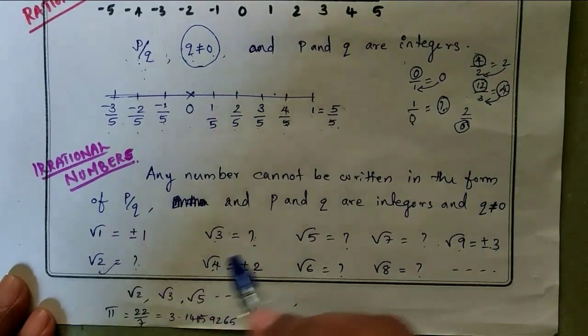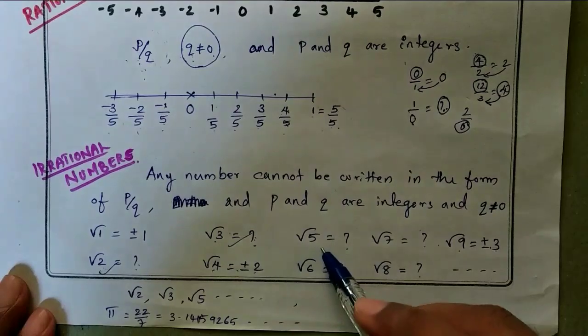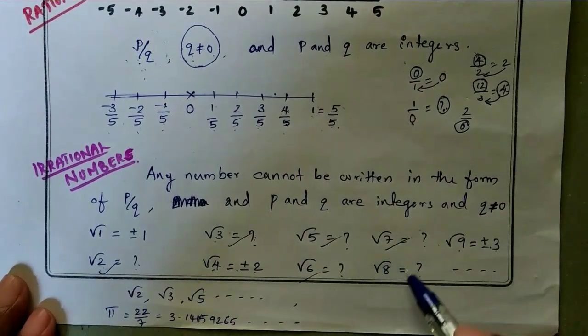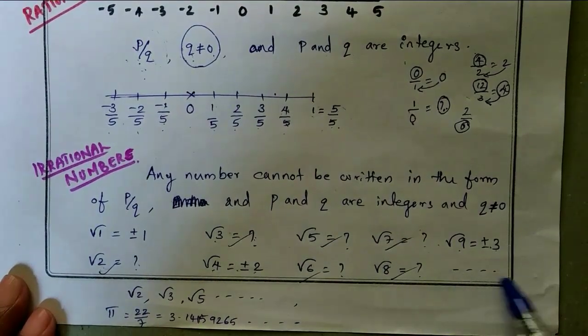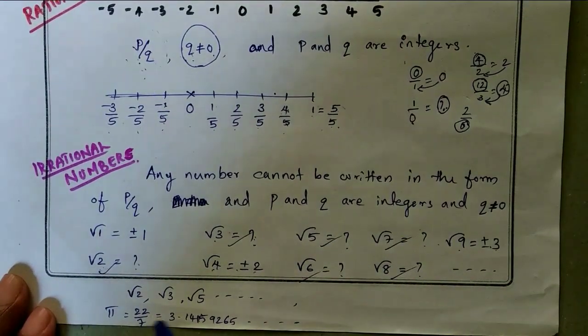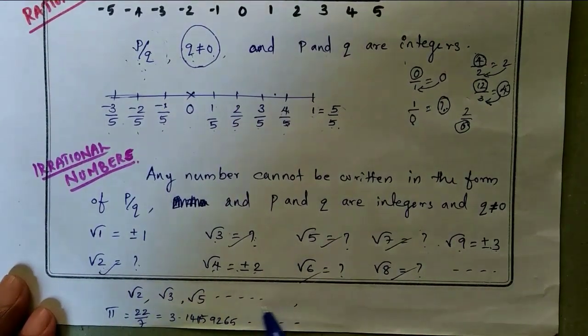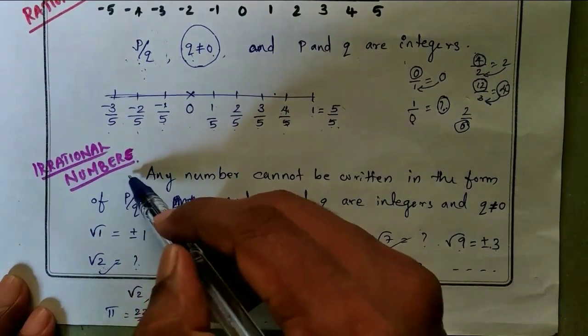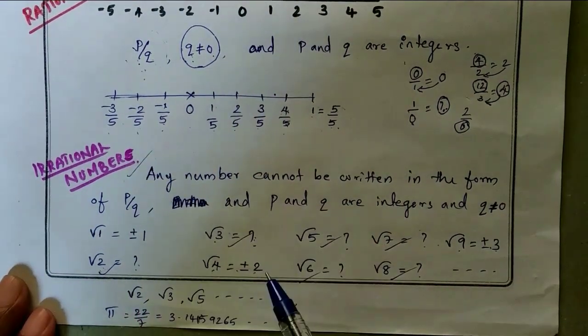There are numbers like root two, root three, root five, root six, root seven, root eight, etc. These numbers are the irrational numbers, because they cannot be written in the form of p by q.